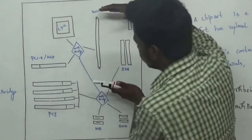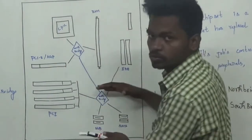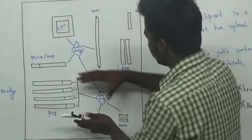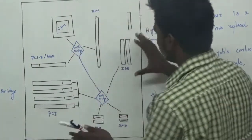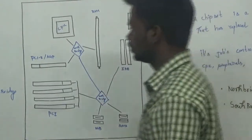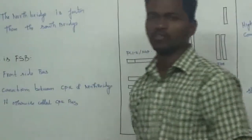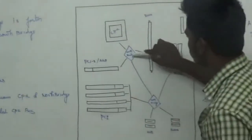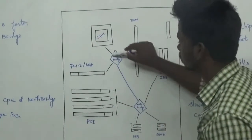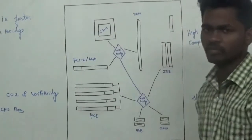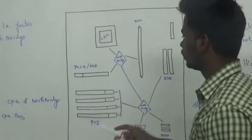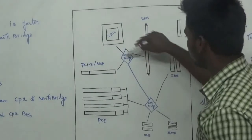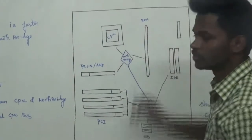The North Bridge path is very high speed compared to the lower speed South Bridge components. The North Bridge handles high speed components. Now, what is FSB? FSB is the Front Side Bus. The Front Side Bus is also called the CPU bus. This is the connection between the North Bridge and the CPU — this is the FSB.